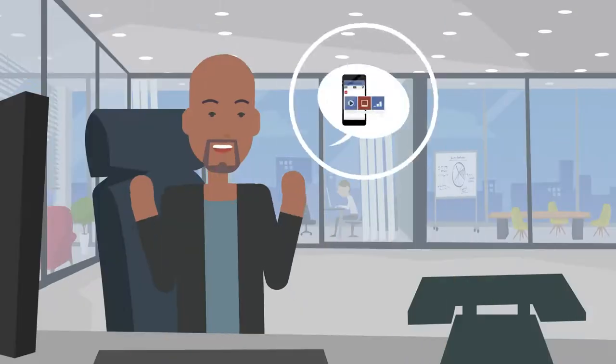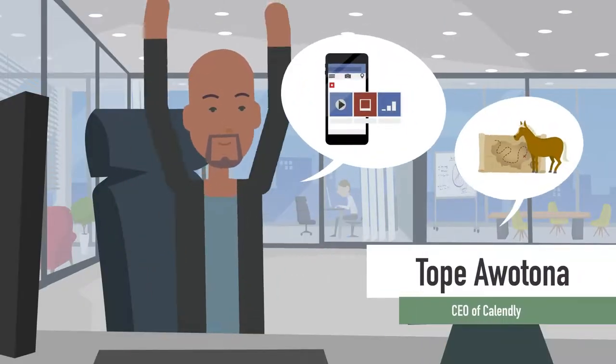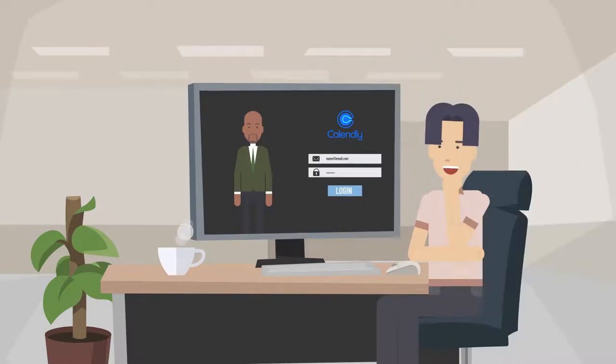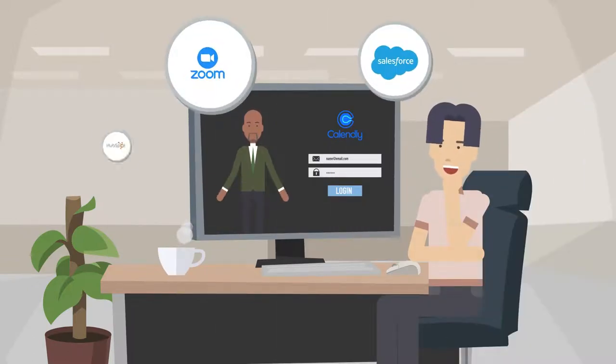Awotona described these free individual users as Trojan horses that get inside enterprise customers who are more likely to pay for the service. Enterprise customers can set up custom login pages and also connect Calendly to their tools such as Salesforce, Zoom, and HubSpot.